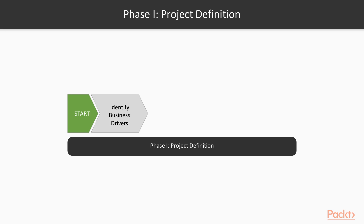Next we're going to look at how to build a business case. Once you've defined the drivers behind an initiative, or the compelling event that's kicked off the project, and understood high level objectives, the next stage is to start building the business case around these. This requires you to go to the next level of detail and to start drilling into the specific areas the solution needs to address. To do this, you need firstly to understand the business strategy, and then identify the key stakeholders for the project.